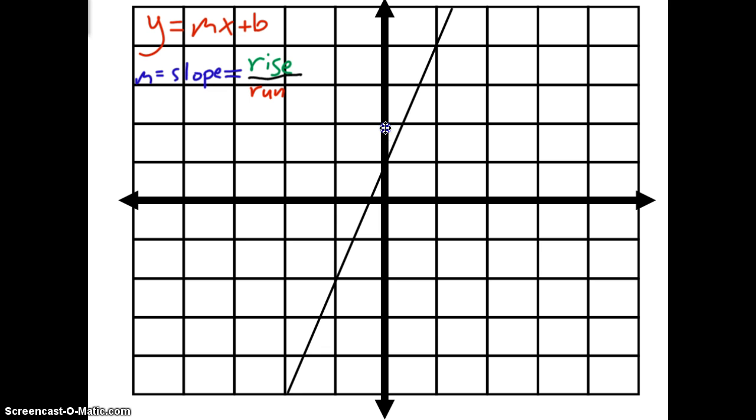But to find my rise and run, I need to find two nice spots on this graph. I like to look at where my graph is crossing points that are on two nice intersections on the grid lines. So here's a good point, and here's a good point.